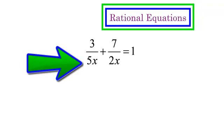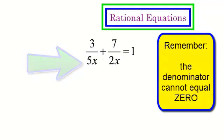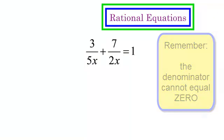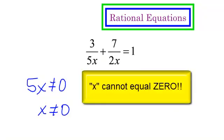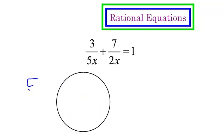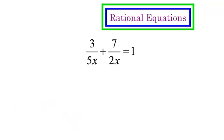My variable is in the denominator. Note what could the variable not equal? These denominators cannot equal zero. Therefore, 5x cannot equal zero, which means if I divide both sides by 5, x cannot equal zero. The same would happen with this 2x — it could not equal zero, which means x could not be zero. X cannot be zero in this problem because if it was, it would make the denominator zero.